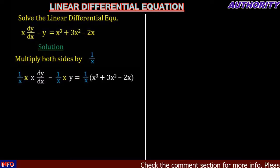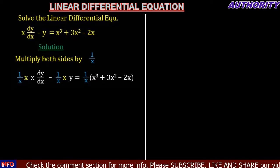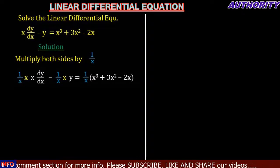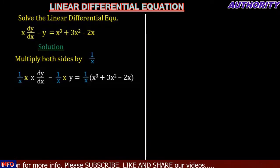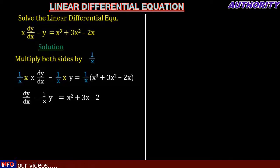We multiply everything by 1 over x. So we are going to have: 1 over x times x dy/dx minus 1 over x times y equals 1 over x times (x cubed plus 3x squared minus 2x). Simplifying the right-hand side gives us x squared plus 3x minus 2.